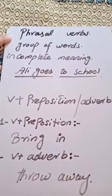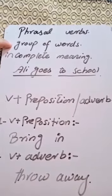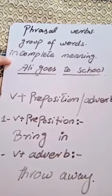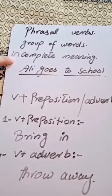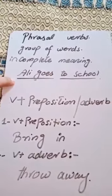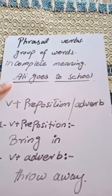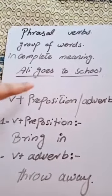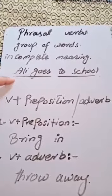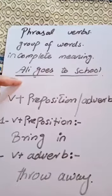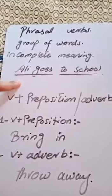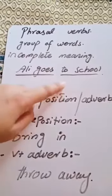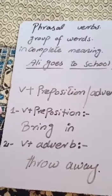A phrase is basically a group of words, and a clause is also a group of words — both are groups of words. But a phrase gives us incomplete meaning or incomplete sense. For example, in the sentence 'Ali goes to school,' divided into two parts: 'Ali goes' gives better understanding — that is your clause. 'To school' gives incomplete meaning — that is a phrase.